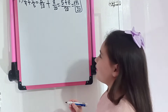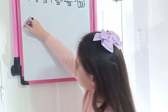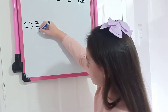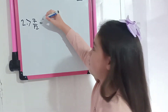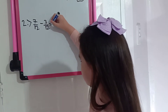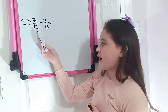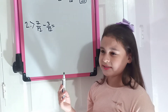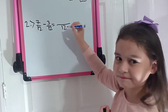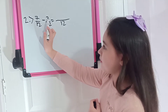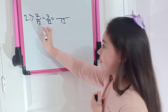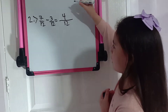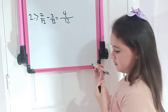Let's move to example number 2. This one is 7 over 12 minus 3 over 12. Since the denominators are the same, we don't have to do anything with them — we just have to copy it. So let's just subtract: 7 minus 3. What is it? 7 minus 3 is 4, so our answer is 4 over 12.